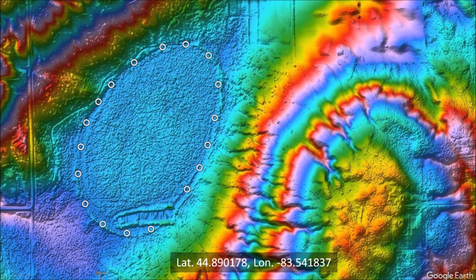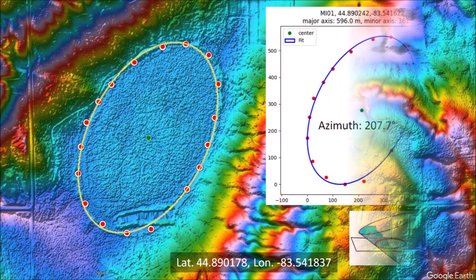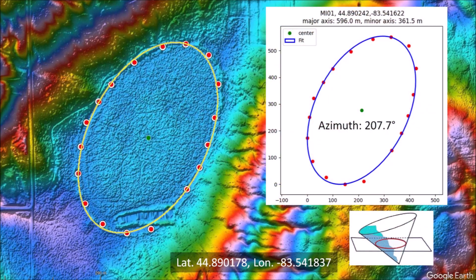We can test the ellipticity of the basin by plotting some points along the perimeter and fitting an ellipse to the points by the least squares method. The fit is very good. Ellipses are conic sections, so this provides evidence that the basin originated as an inclined conical cavity. One point to the south is outside the ellipse, but this is probably due to a construction project that left a scar along the rim of the basin. This basin has a major axis of 596 meters and a width of 361 meters. It is large enough to fit five football fields. The azimuth of the basin is 207.7 degrees.